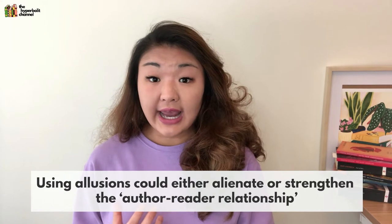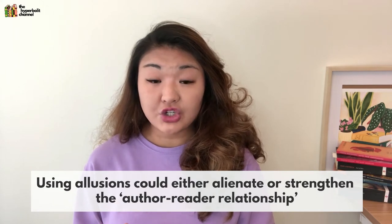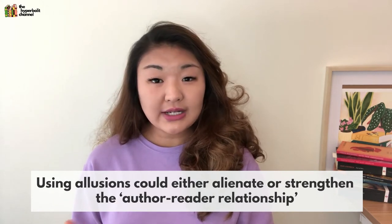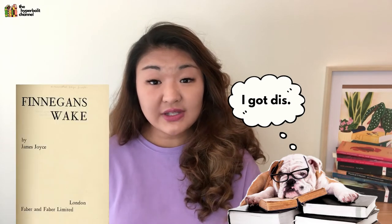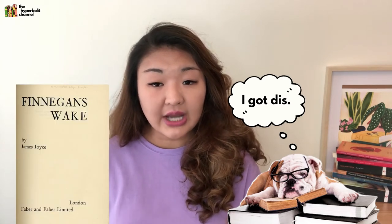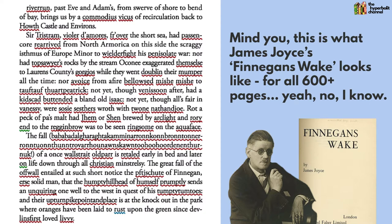Now this is all fine when the allusive reference is widely known, but there are those writers who deliberately use incredibly obscure references, and modernists like James Joyce and Ezra Pound are some extreme examples. So depending on the reader, this could either alienate or strengthen the author-reader relationship. An English professor who's widely read may find it easier to appreciate Joyce's Finnegans Wake than your average layman reader, largely because they would get a lot more of the esoteric allusions — even though who would enjoy Finnegans Wake?